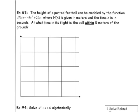The height of a punted football can be modeled by the function h of x equals negative 5x squared plus 20x, where h of x is given in meters and the time x is in seconds. At what time in its flight is the ball within 5 meters of the ground? If we were to graph this function here, we'd get some upside-down parabola that would show us the height of the ball over x seconds. As the ball is traveling through time, it's also going up and then coming back down. So we can graph this and get a visual for what it looks like based on time.